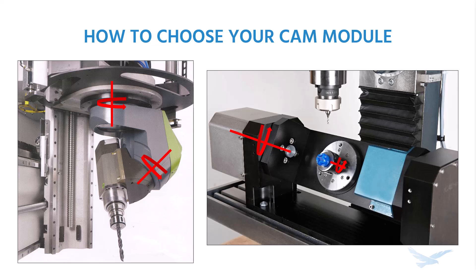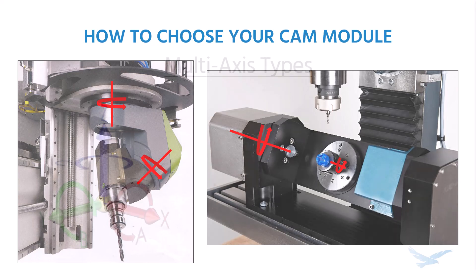When you upgrade the machinery, you also need to make sure that you're looking at upgrading your CAM software so that you can better utilize the functionality of that machine. When we refer to multi-axis, we need to determine what type of multi-axis we're talking about. So let's take a look at those types.